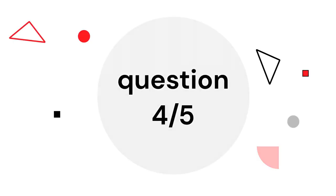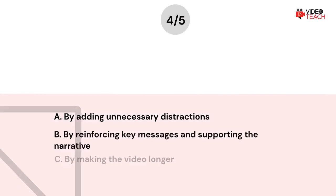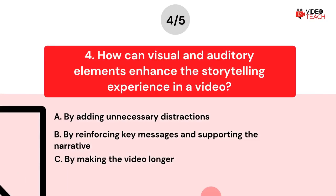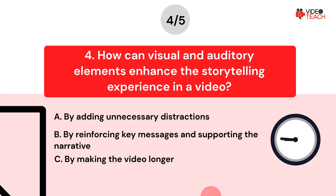Question number four. How can visual and auditory elements enhance the storytelling experience in a video? Option A: By adding unnecessary distractions. Option B: By reinforcing key messages and supporting the narrative. Option C: By making the video longer. Now you have about 15 seconds to think about your answer.